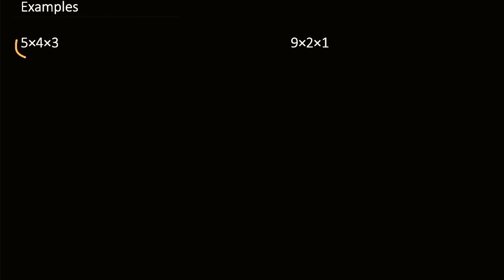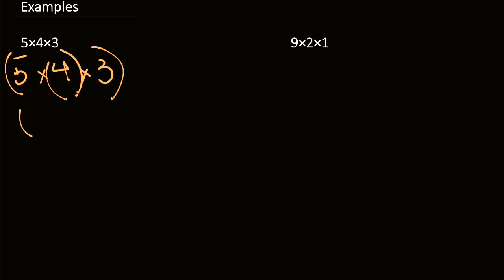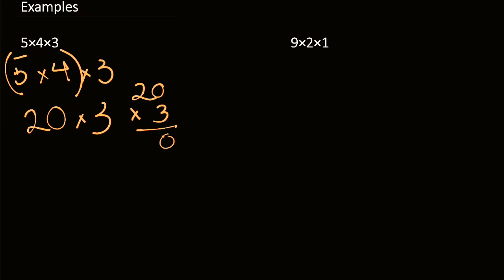We're going to do 5 times 4 times 3. We can multiply it all out or we could use the associative property and group whichever two. We can group 5 times 4, 4 times 3, or 5 times 3 — but don't do them all at once. I'm going to group 5 times 4. 5 times 4 is 20, then we have 20 times 3, which is equal to 60. So we know that 5 times 4 times 3 is equal to 60.